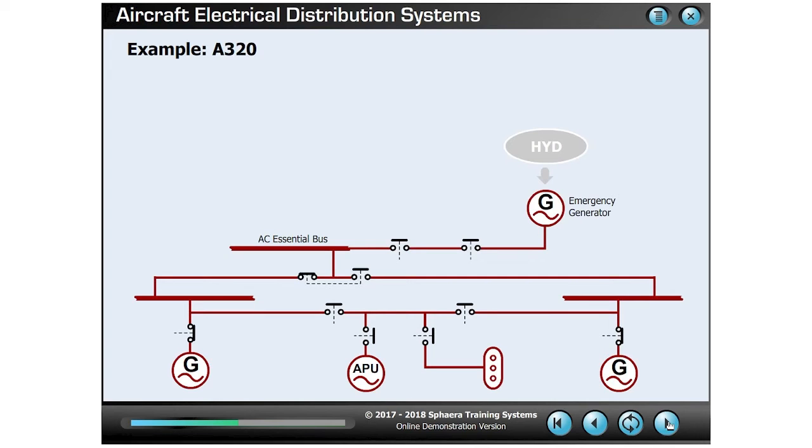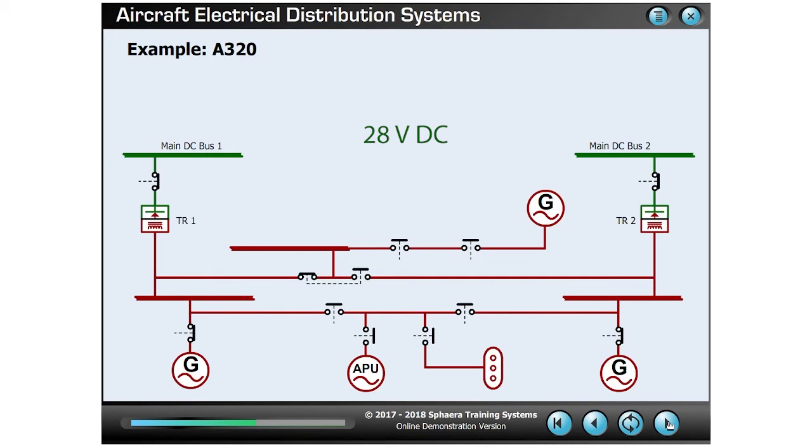As well as AC power, the aircraft also has a 28 volt DC system. This is provided by two transformer rectifier units which convert the AC into DC to supply the two main DC busbars.